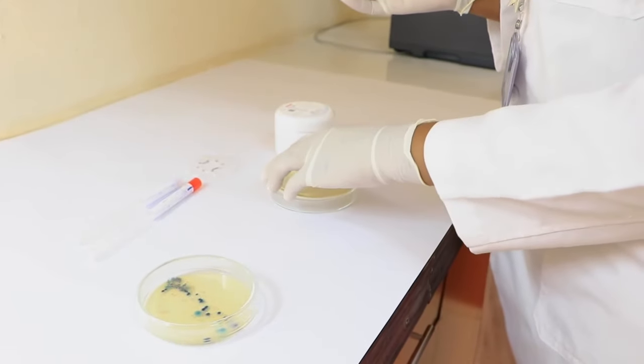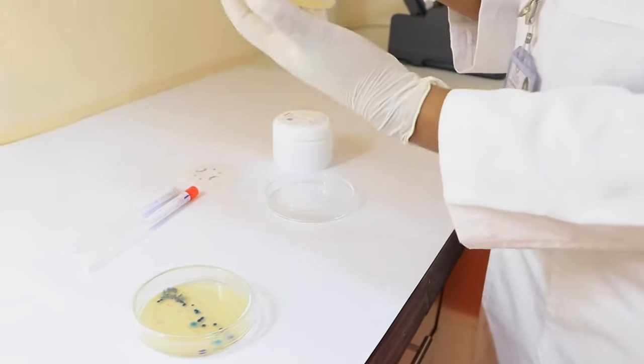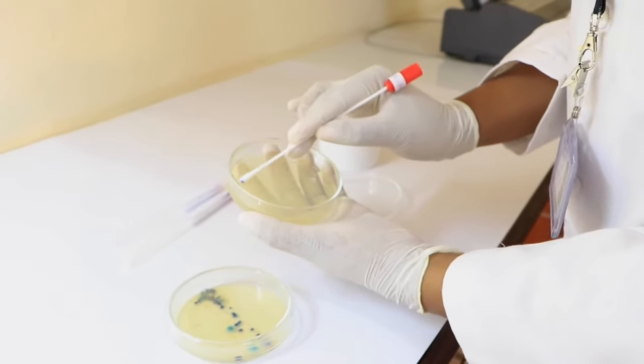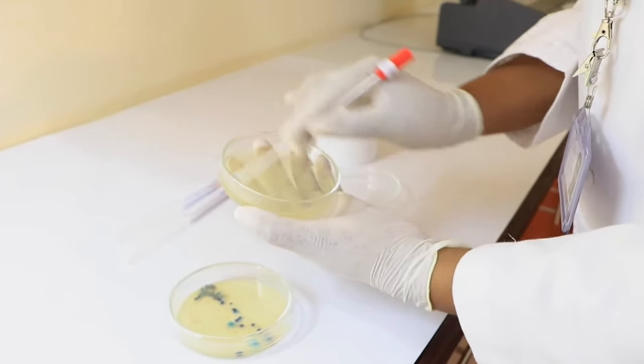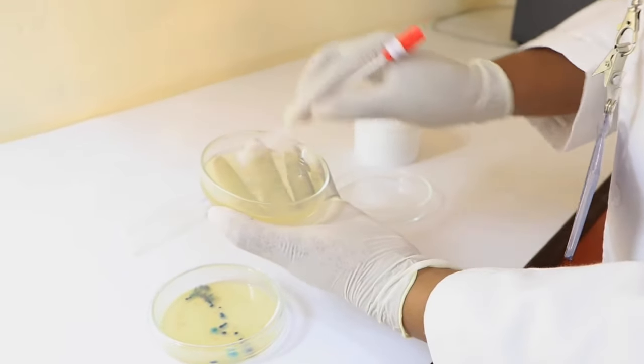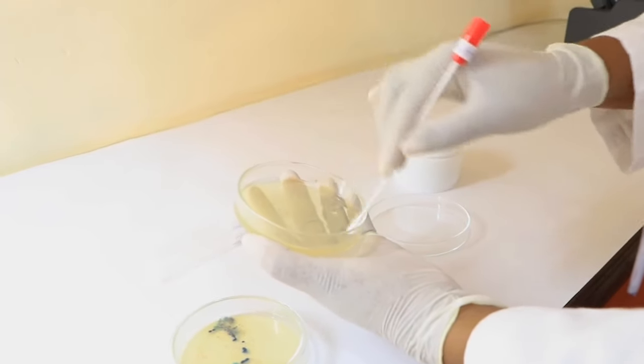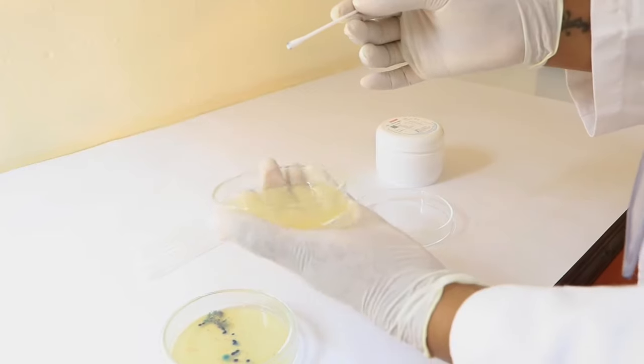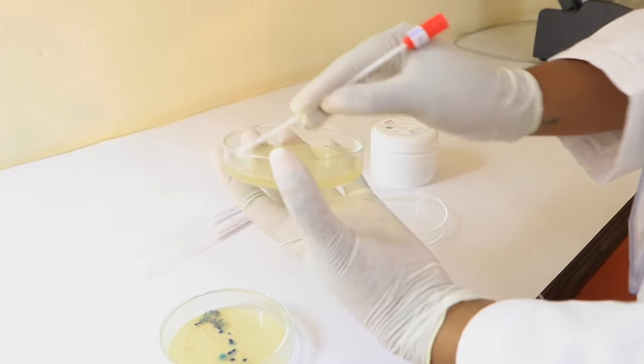Inoculate a lawn on the Mueller Hinton Agar by spreading the bacteria evenly to cover the whole plate. You can spread the bacteria again in the perpendicular direction.